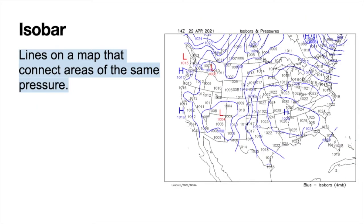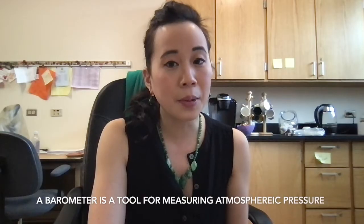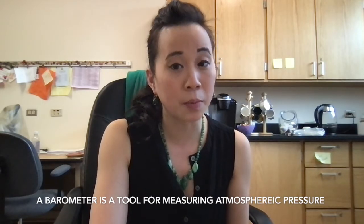We can represent air pressure on what we call an isobar map. On an isobar map, lines connect areas of the same pressure. It's worth noting that these air pressures account for temperature and humidity but not altitude — the pressures are mathematically corrected as if the entire United States were at the same altitude above sea level. The unit for air pressure is millibars, and the tool for measuring air pressure is called a barometer. A barometer can be a standalone instrument, or you can actually build one.